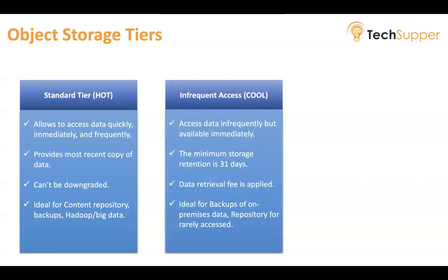The second tier is called infrequent access, sometimes referred to as cool storage. It is used for data you access infrequently but that must be available immediately when required. It is cheaper than the standard tier. If you are uploading an object to a standard bucket, you must explicitly assign the object to the lower-cost infrequent access storage tier. The minimum storage retention for infrequent access is 31 days, and a data retrieval fee is applied when you access data. It is ideal for backups of on-premises data, rarely accessed backups, and storage for data replicated from another region.